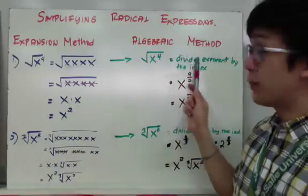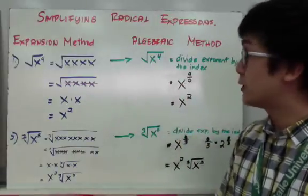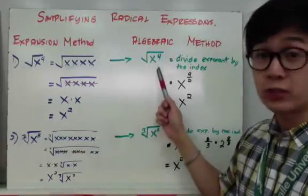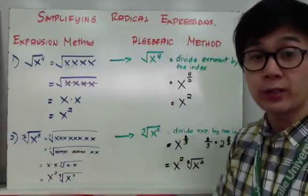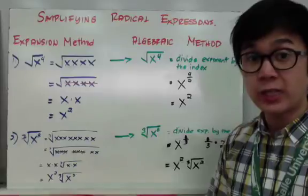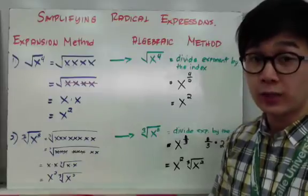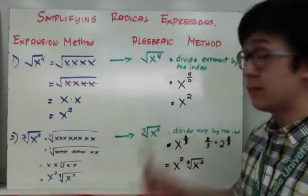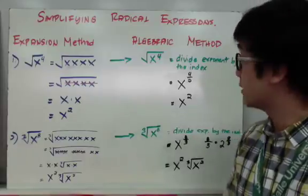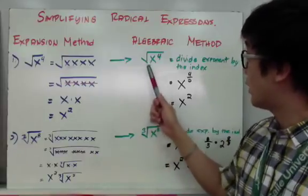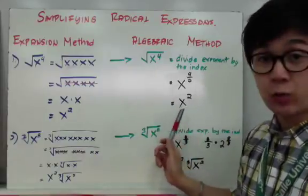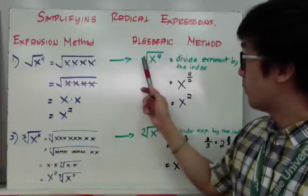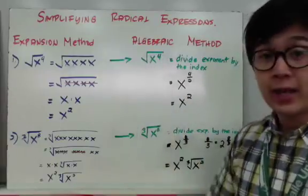Using the algebraic method and the law of exponents, square root of x to the fourth can be written as x raised to 4 over 2. Since 4 over 2 simplifies to 2, square root of x to the fourth is simply x squared — you divide the exponent by the index.